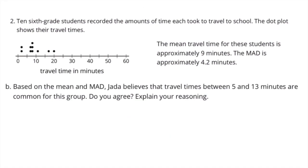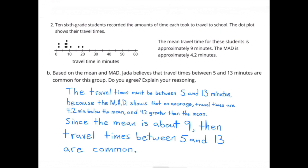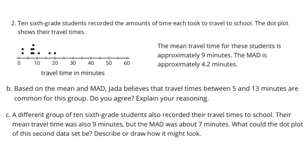Part b: Based on the mean and MAD, Jada believes that travel times between five and thirteen minutes are common for this group. Do you agree? The travel times must be between five and thirteen minutes because the MAD shows that, on average, travel times are 4.2 minutes below the mean and 4.2 minutes above the mean. Since the mean is about nine, travel times between five and thirteen minutes are common.